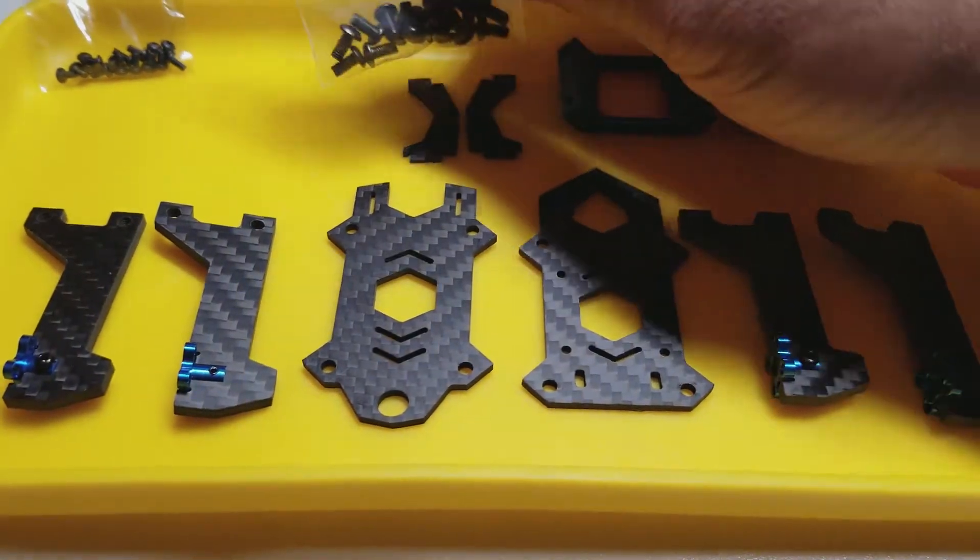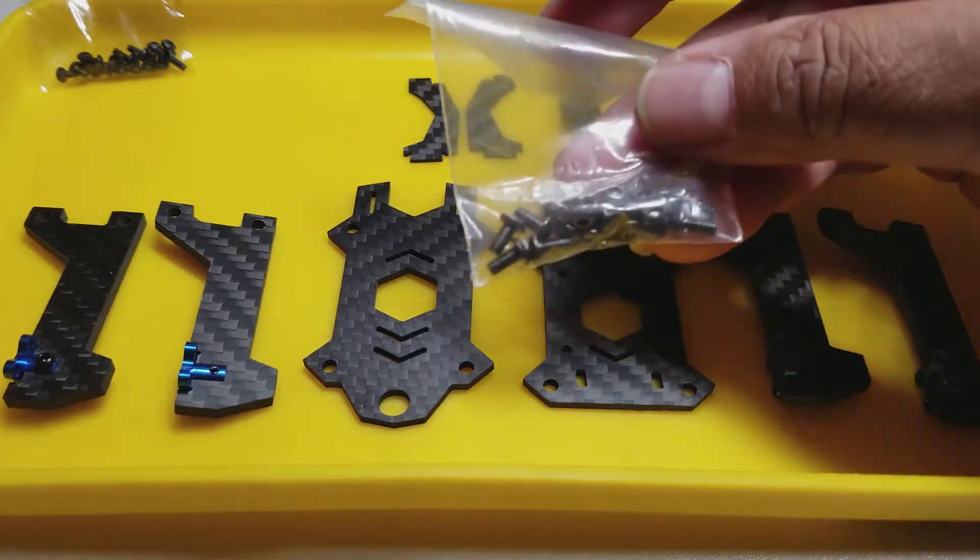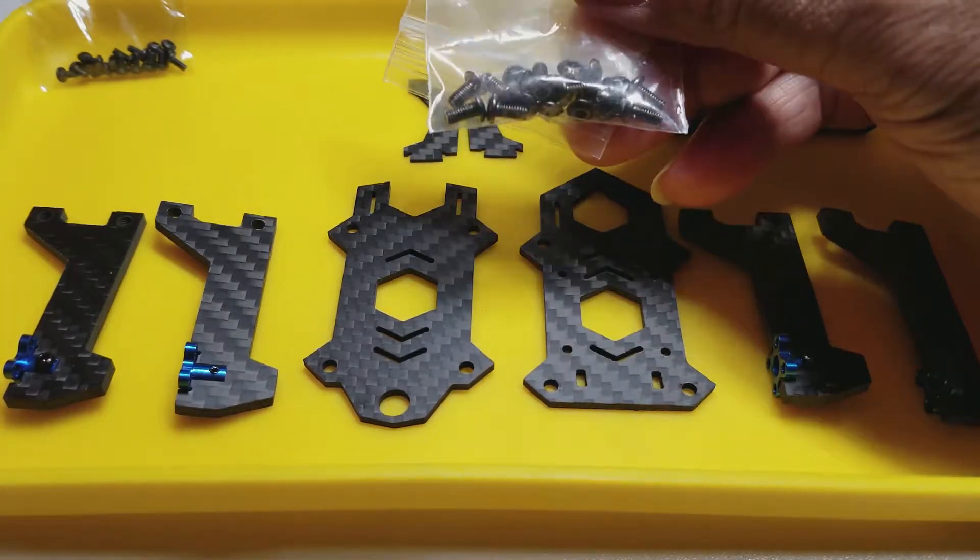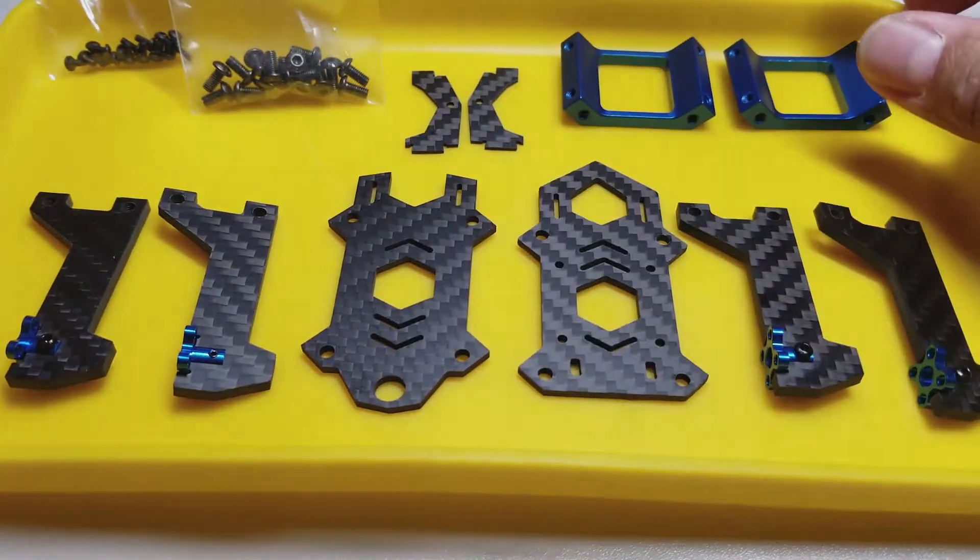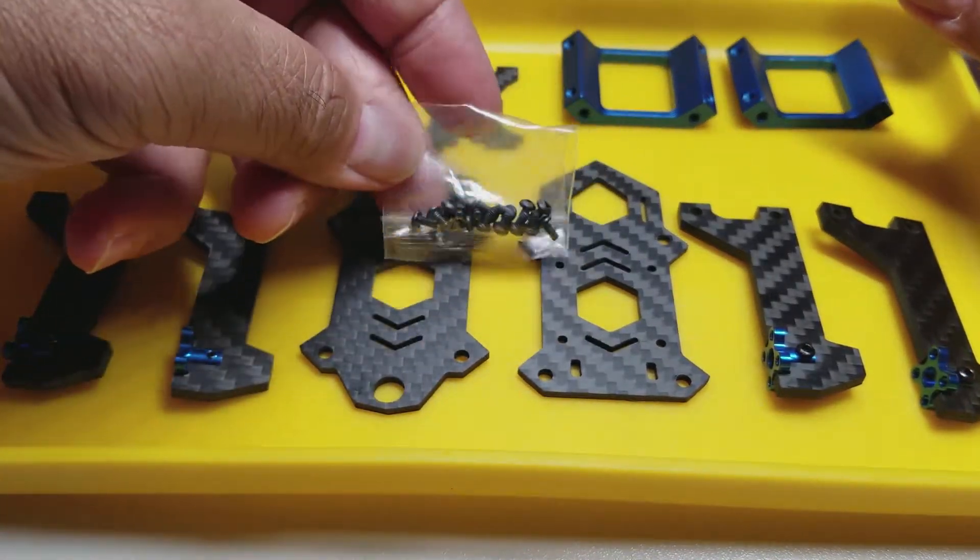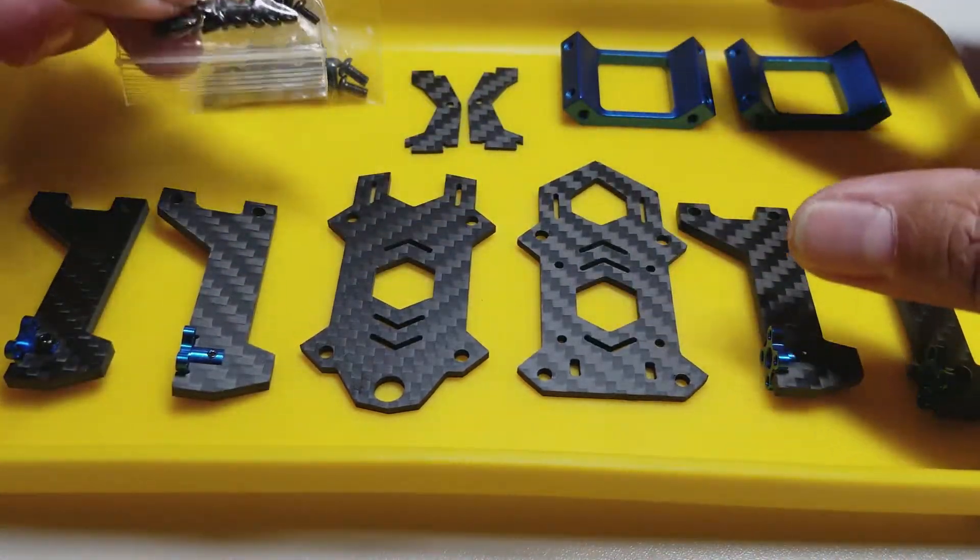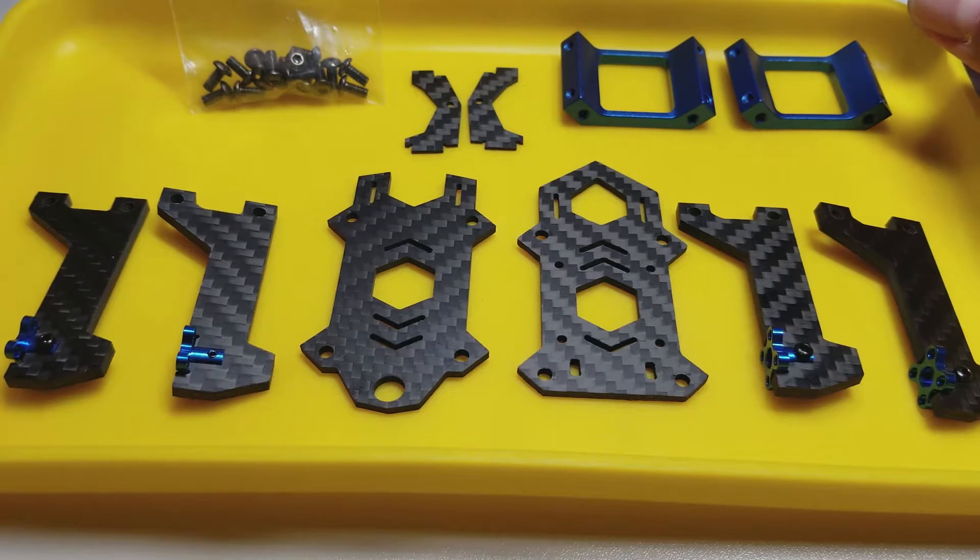And here's 16 M2, these are actually M3 by 6mm. And the whole frame basically goes together with these screws. And then you get the M2 by 4mm, 16 of these. I think these are for the motors or intended for the motors because they don't go anywhere on the frame. But it's nice they included those.